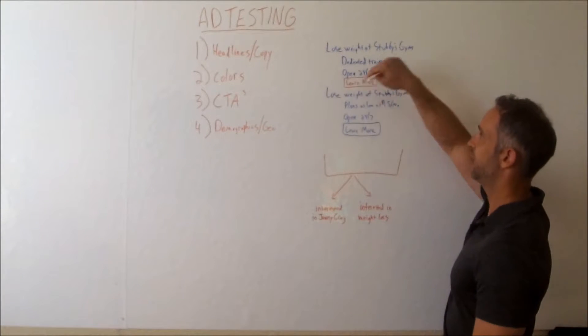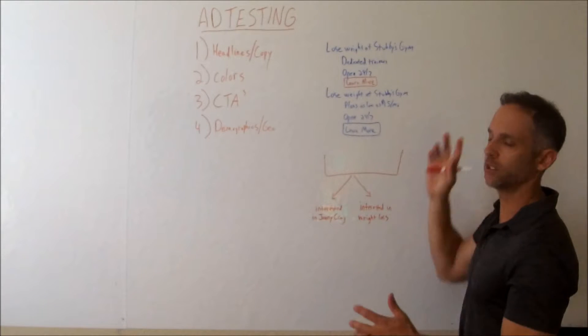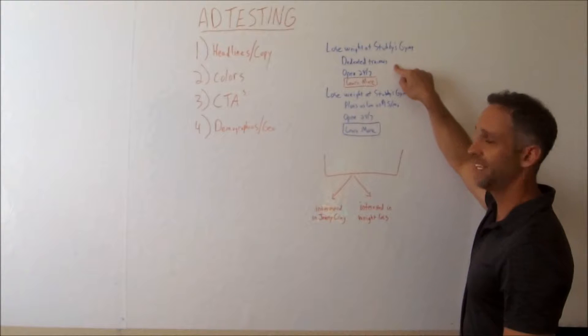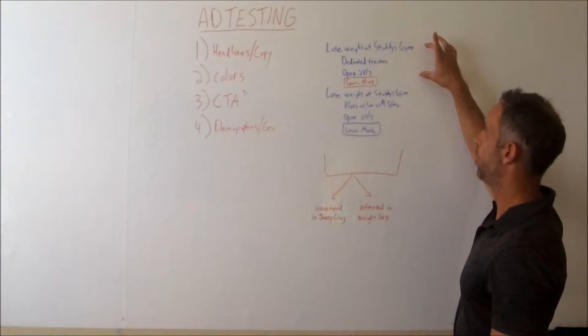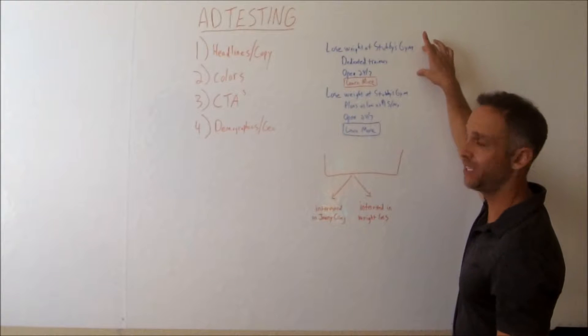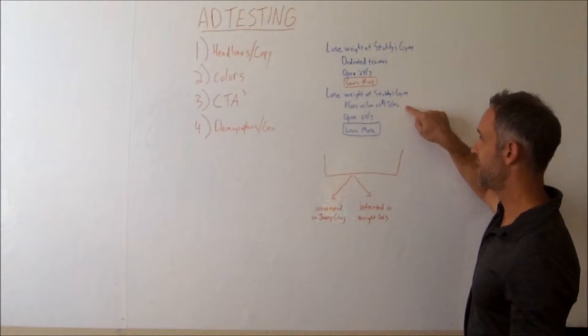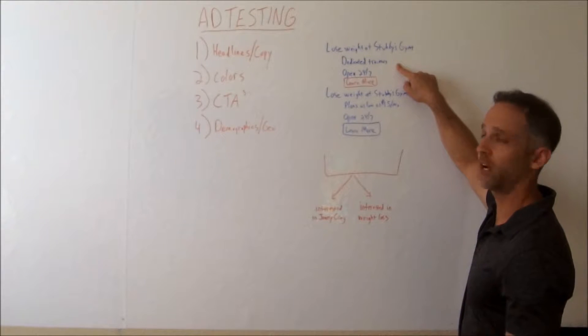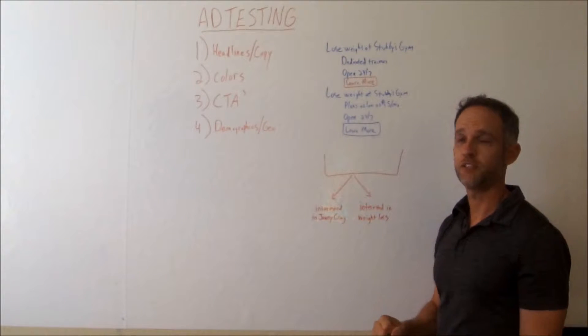So in this case, headline and copy, you want to lose weight at Stubby's Gym. That's the ad. It's not a real gym. I just made up the name. So lose weight at Stubby's Gym, dedicated trainers, open 24-7. Now, the only difference between those three lines and the three lines in this ad is the second line here. The second line in this ad is dedicated trainers. The second ad here is plans as low as $15 a month.